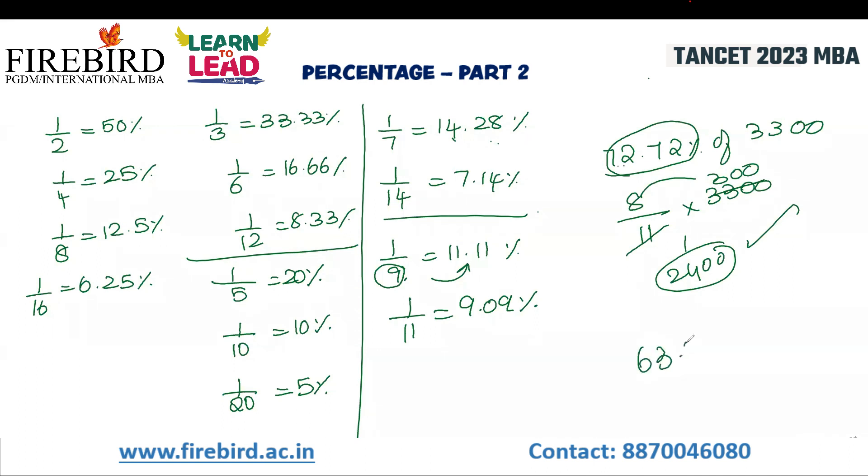See, 63.63%. 63 is a multiple of 9. The denominator is 11. How many times 9 is 63? 7 nines are 63. Then 7 by 11 is the equivalent fraction.